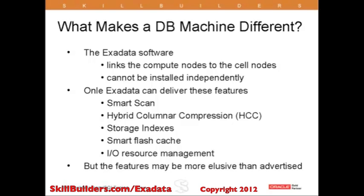Lastly, IO Resource Manager. This is important because of the size of the database machine. Many sites will be using a database machine for database and server consolidation. If you are running 20 or 30 databases on one box, you need to be absolutely certain that one database is not going to impact another. The IO Resource Management capability allows you to set up resource management within the database instances in the compute nodes and push those priorities down to the storage tier, so that the cells themselves are aware that certain databases must never have performance degradation no matter what the workload is on other databases.